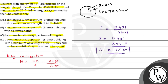यहाँ से हम लोग कह सकते हैं कि जो minimum wavelength मिला continuous spectrum के लिए वह है 0.155 Angstrom। अब since जो incident energy जो है वो 80 kilo electron volt है, जो कि K-shell की ionization energy से ज्यादा है। Since incident energy is greater than the ionization energy of K-shell electron.